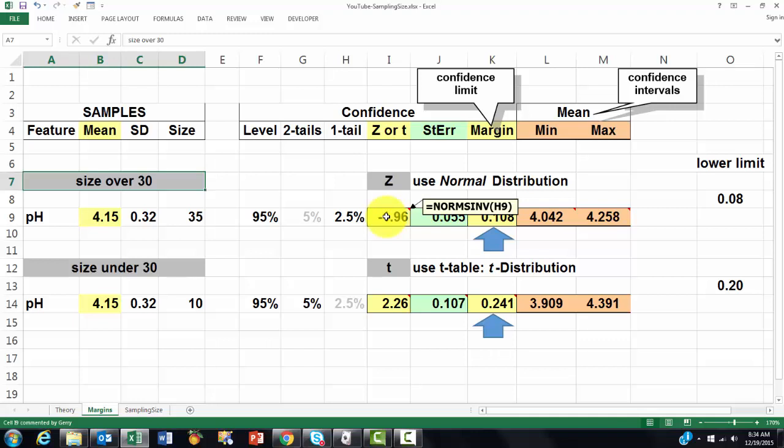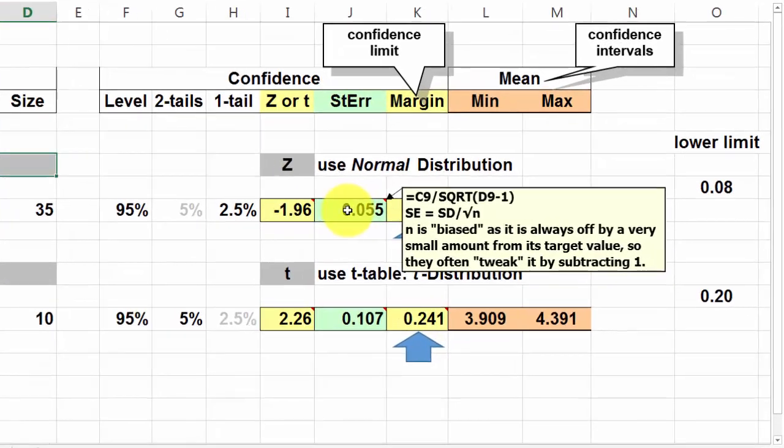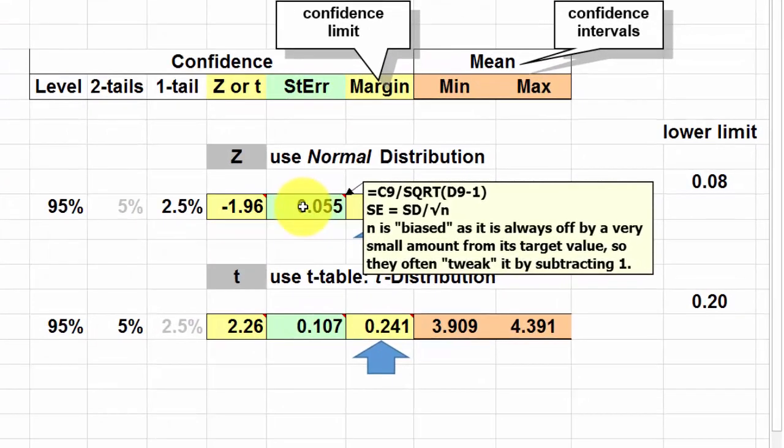If you don't want that minus, put that norms inverse inside the abs function. Then we need to calculate the standard error. The standard error is always the standard deviation you found divided by the square root of the number of cases. Usually they say the number of cases minus 1. They tweak it by subtracting 1. It's up to you. In this case I did minus 1.